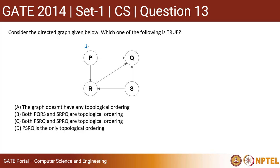This is the graph. Which one of the following is true? This question considers topological sorting of the given graph. The options are: A) The graph does not have any topological ordering. B) Both PQRS and SRPQ are topological orderings. C) Both PSRQ and SPRQ are topological orderings. D) PSRQ is the only topological ordering. We need to find out which option is correct.